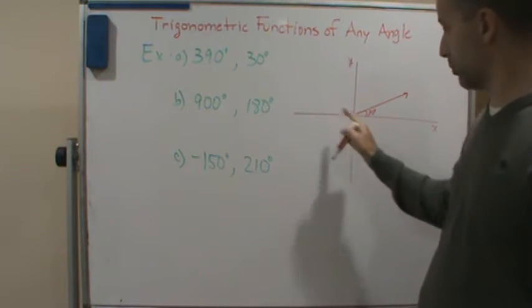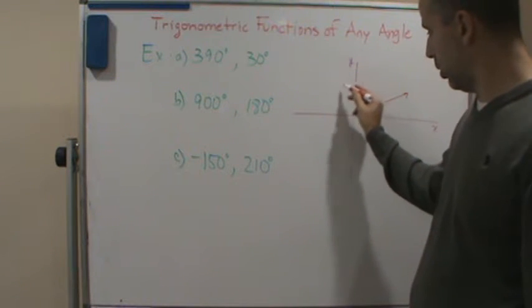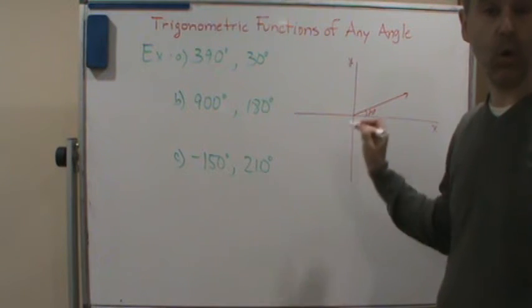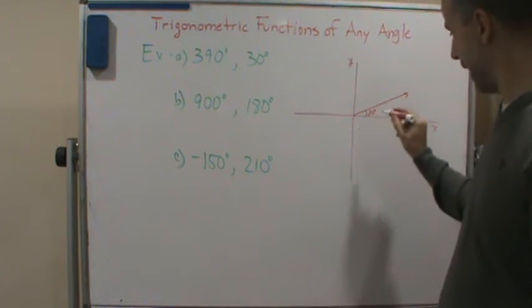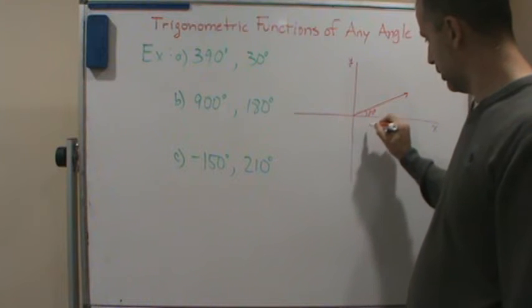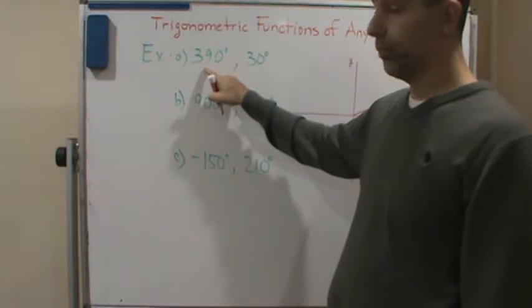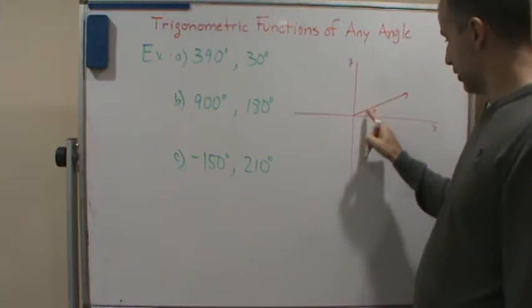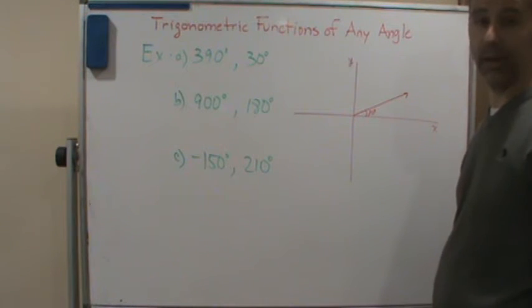Now, if this is coterminal to 390, I should be able to go a whole distance around and come back, which means I should be able to add a whole revolution, which is 360 degrees. So if I add 360 degrees all the way around to 30, what do I get? Well, 390. So if I add 360 to the 30 degrees, I come all the way back and I get 390 degrees.